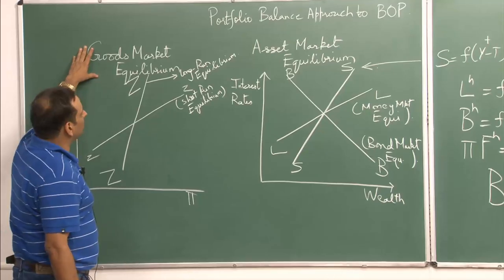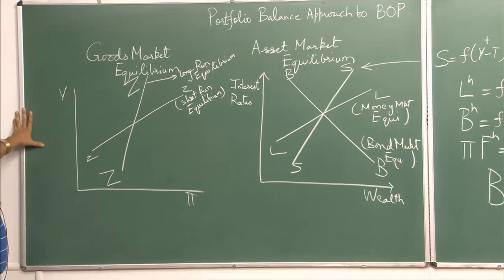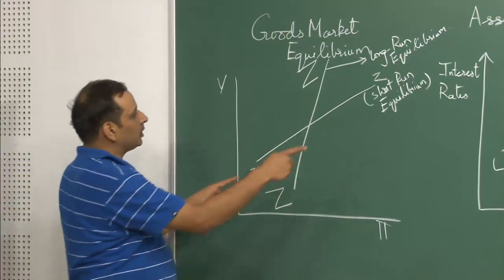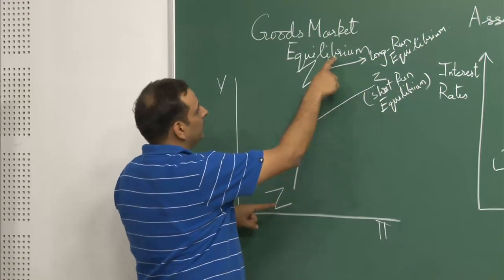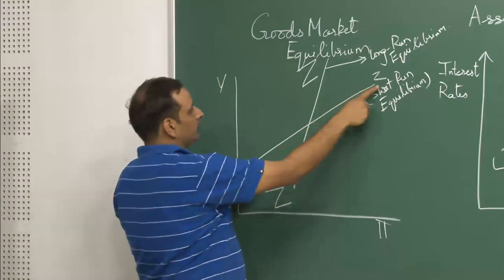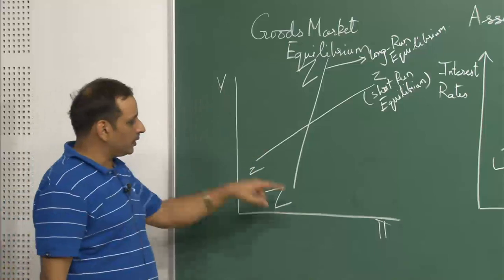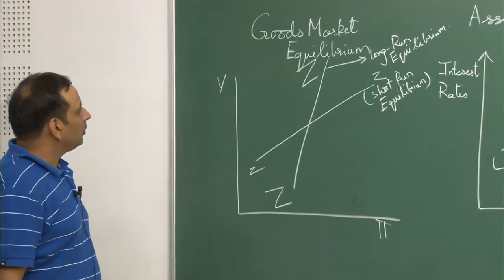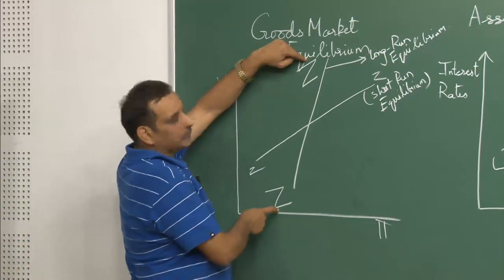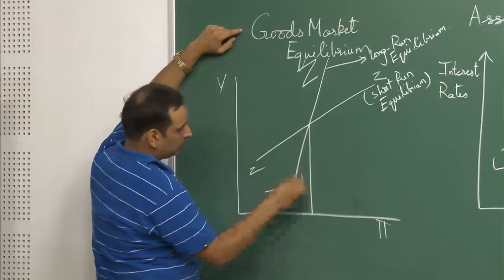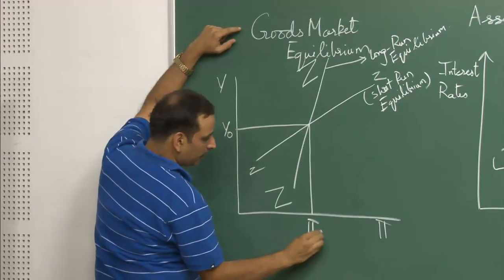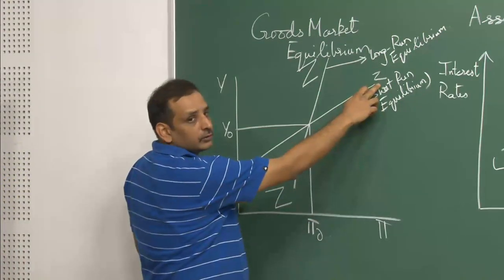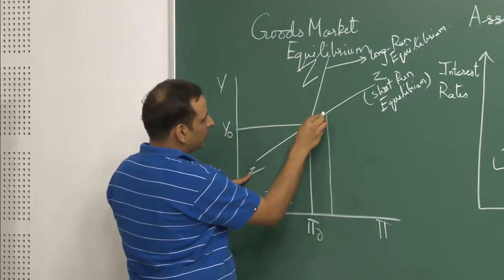If you look at the goods market equilibrium, you have national income on the y-axis and exchange rates on the x-axis. You have two curves: the small zz curve and the big ZZ curve. The small zz curve shows different combinations of income and pi which will give you the short run equilibrium in the goods market, while the big ZZ curve depicts the long run equilibrium.